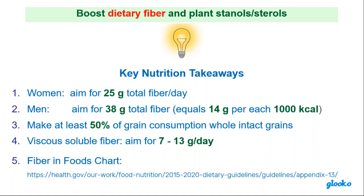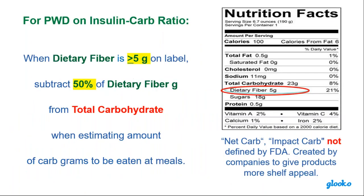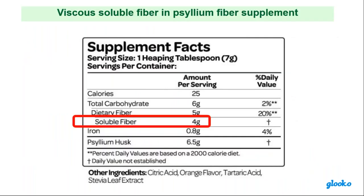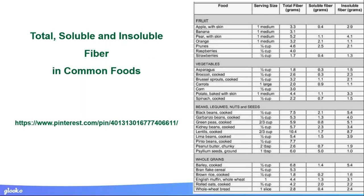The key nutrition takeaway: total fiber is 25 grams for women, 38 for men — 14 grams per 1,000 calories. But it's the viscous soluble fiber — that gelling fiber — that reduces the speed at which glucose moves into the blood: 7 to 13 grams a day of soluble fiber. Psyllium fiber is one of the highest solubility fibers available, and you can buy it in powder form — one tablespoon has 4 grams of soluble fiber. We need to provide patients with a chart showing which foods contain soluble fiber.